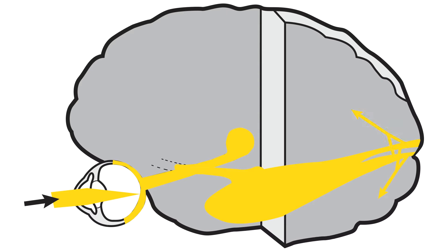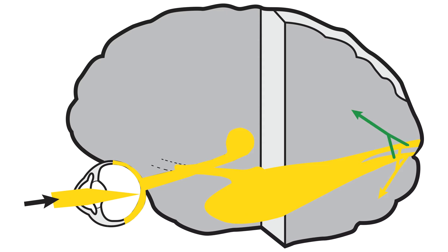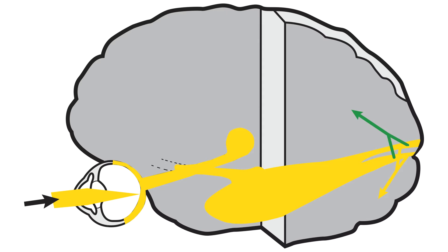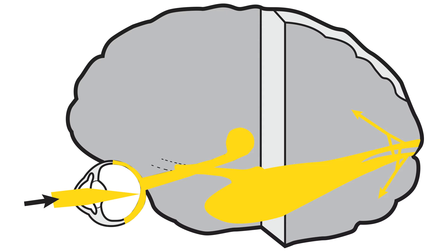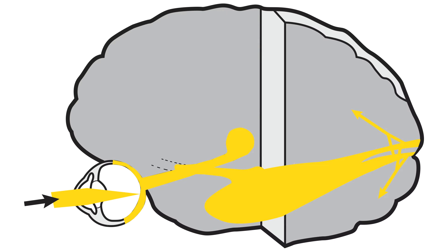The dorsal perceptual stream carries the signal to parietal vision-associated cortex. Here, visual information is integrated with auditory, somatosensory, and motivational inputs to allow visual, spatial, and attentional function.